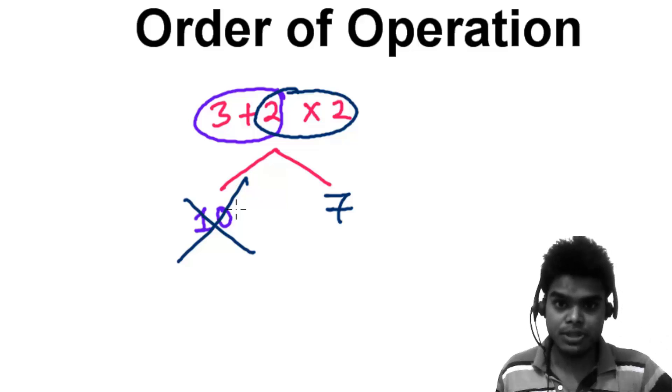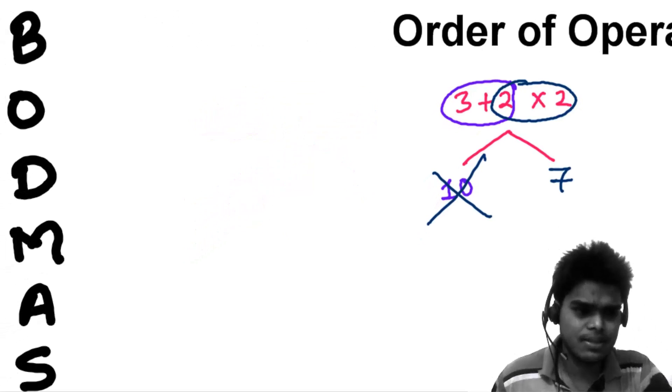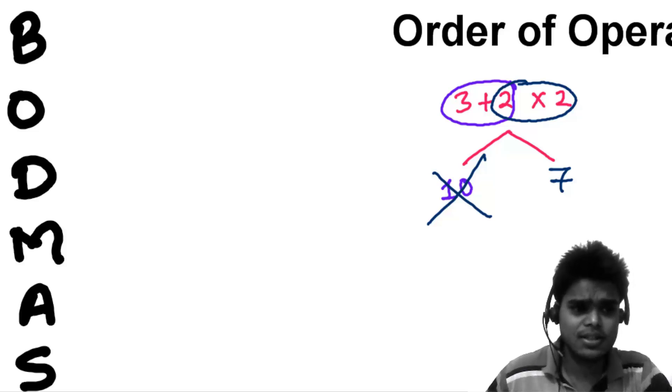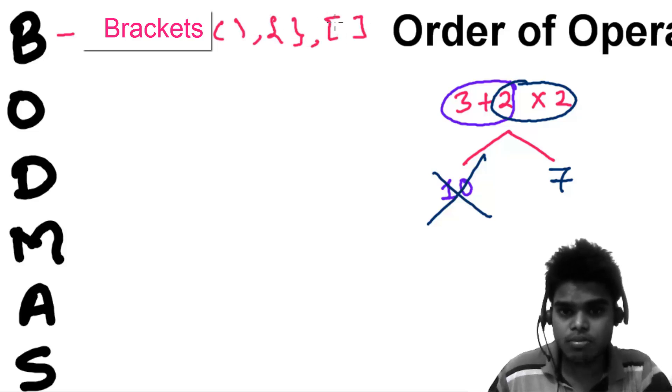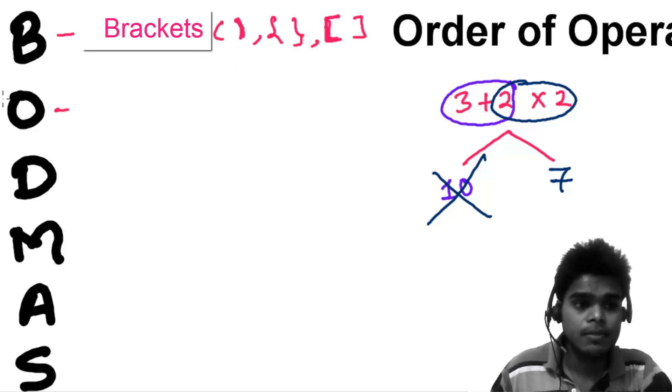The order of operation is called BODMAS. B stands for brackets. There are three types: parentheses, braces, and big brackets. Some people call them small, middle, and big brackets. First, you have to deal with the brackets, then you have to deal with the others.